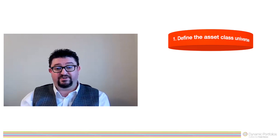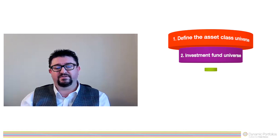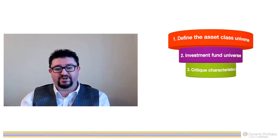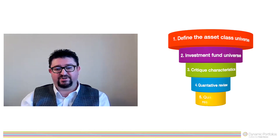The fund selection process is sub-categorized into five steps. Those five steps are: one, define the asset class universe; two, define the investment fund universe; three, critique the characteristics of those funds; four, judge the active funds using quantitative ratios; and five, judge the active funds using qualitative research.